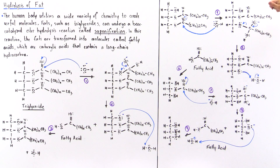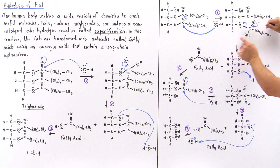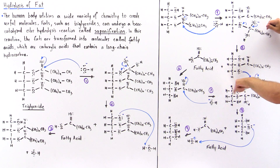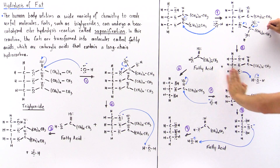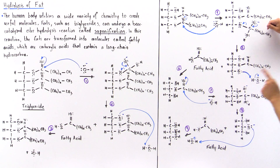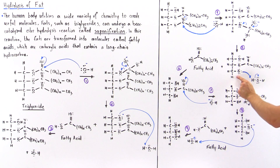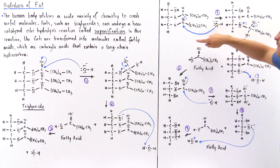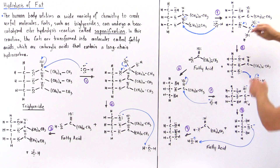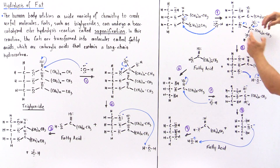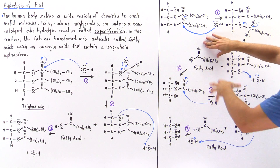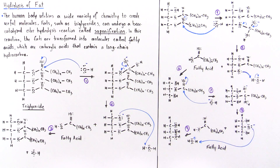The pi bond is reformed, and once again if this leaving group is kicked off we go back, but if this bond breaks off we proceed to step five, producing an intermediate with a negative charge on this oxygen. We also produce the second fatty acid, which comes from this entire molecule breaking off — this is our second carboxylic acid, our second fatty acid.